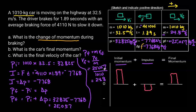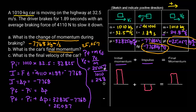Now let's look at what this problem is asking for. We're looking for the change in momentum, and that's going to be negative 7,768 kilogram meters per second.